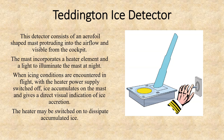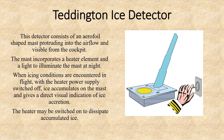When the aircraft moves, snowflakes or snow particles get adhered to the surface, which is visible to the pilots. When icing conditions are encountered in flight, ice accumulates on the mast, giving a direct visual indication of ice accretion. It also has a heater element which may be switched on to dissipate the accumulated ice.